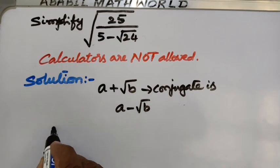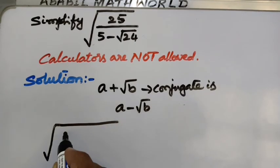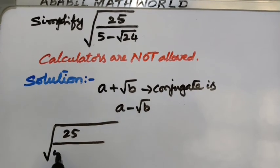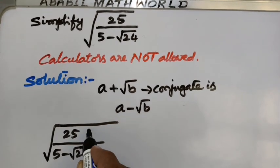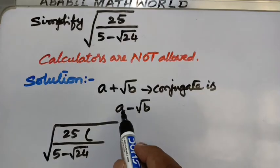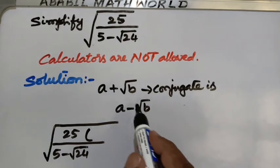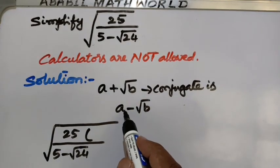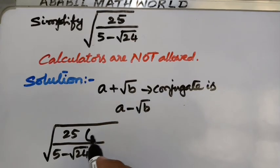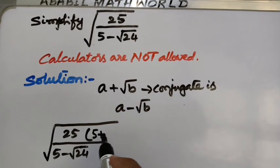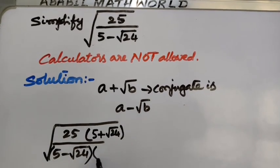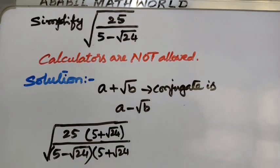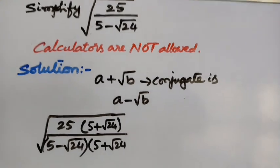So the given problem is 25 by 5 minus root 24. Now for this, we multiply by its conjugate. For 5 minus root 24, the conjugate is 5 plus root 24 — because for A minus root B, its conjugate is A plus root B.